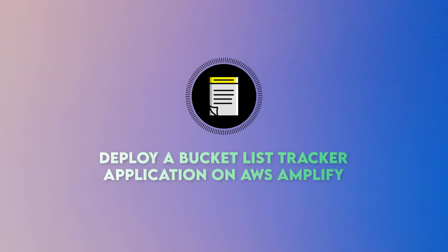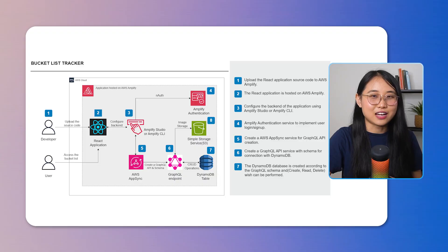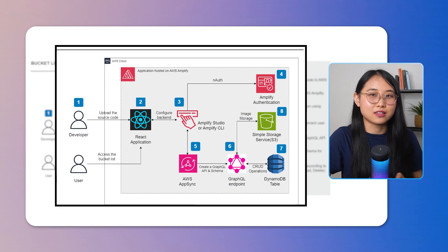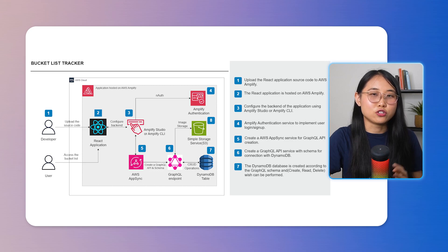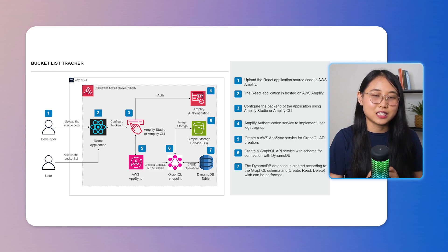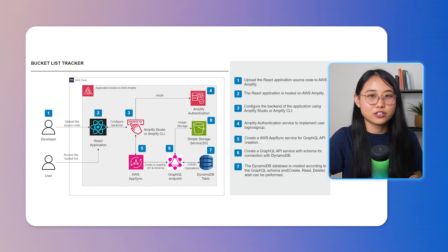The fifth and final project is to deploy a bucket list tracker application on AWS Amplify. Once built, it will help you keep track of all the things you want to do in life — you can enter bucket list items and delete them once they're complete. The architectural diagram for this project looks more complex because it uses multiple AWS services. The first step is to build your application with React, focusing on user-friendly design. Next, initialize a GitHub repo and connect your local development environment to GitHub. Then use AWS Amplify to host your front-end and implement Amplify authentication to add login and sign-up features. Develop the backend using AWS AppSync and a GraphQL API for efficient data handling, and integrate it with DynamoDB for data storage. Finally, deploy your application on AWS Amplify, test it out, and make any necessary adjustments.